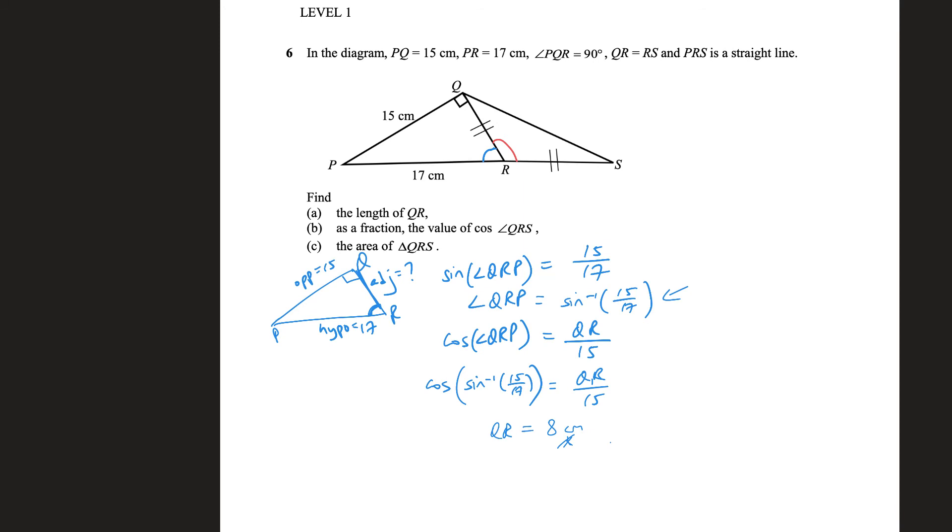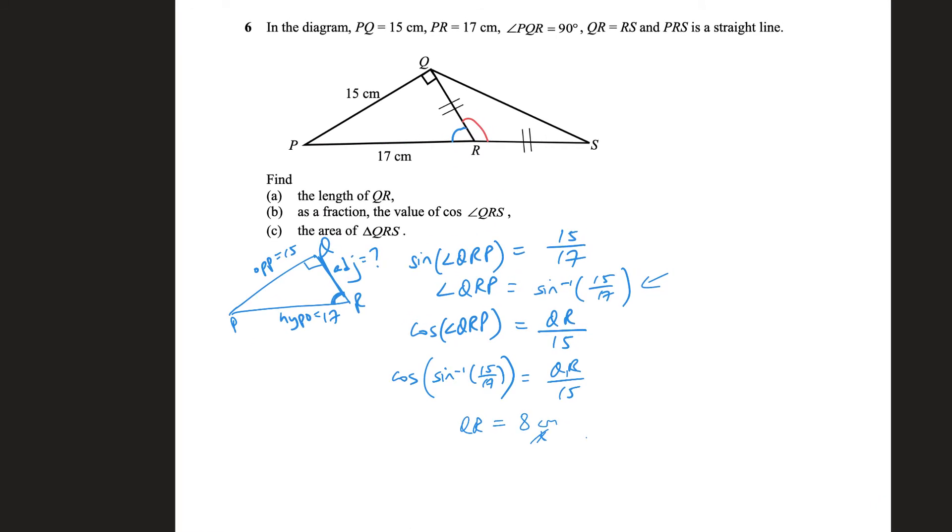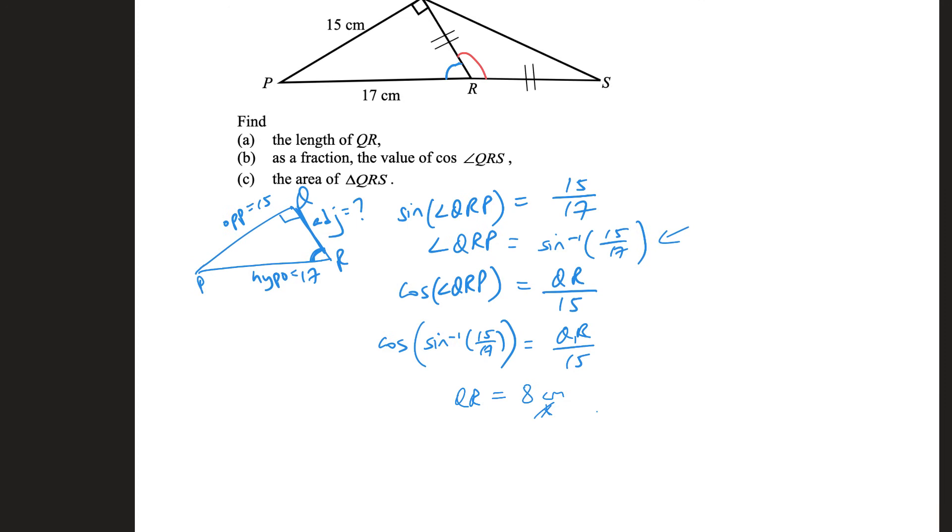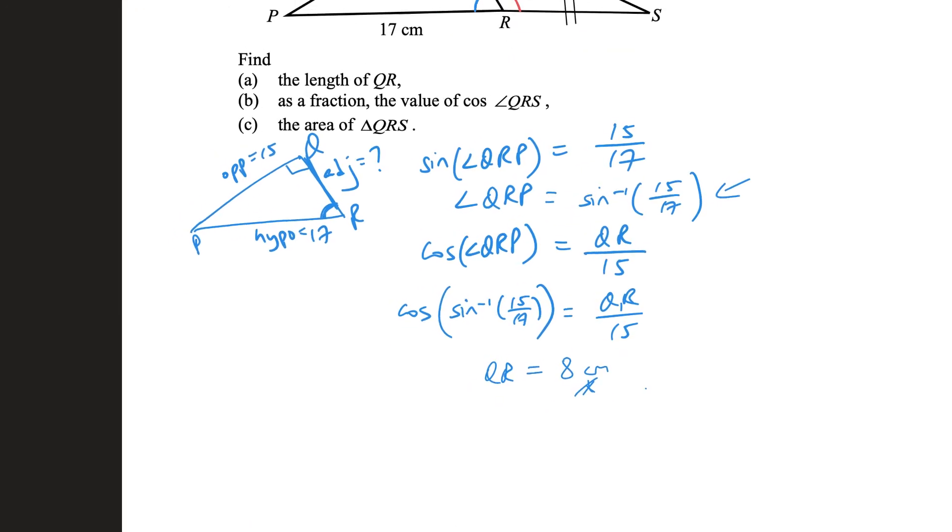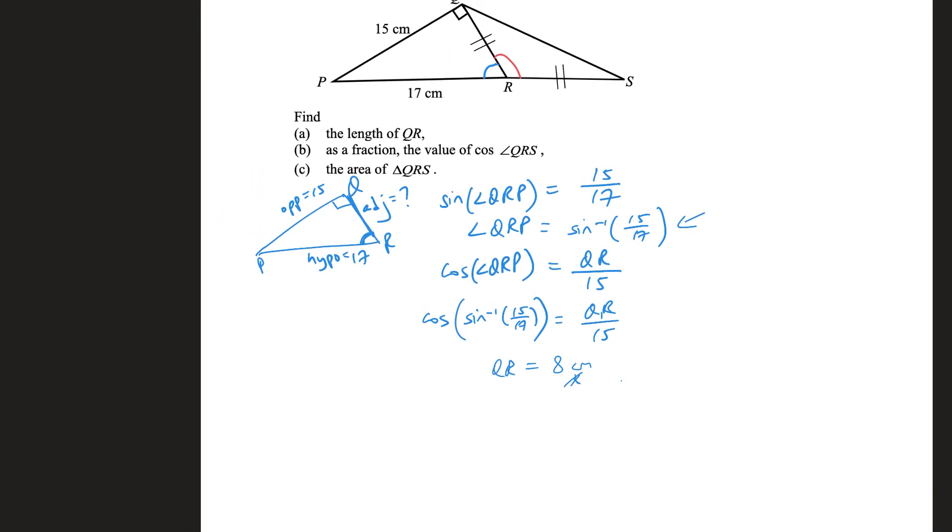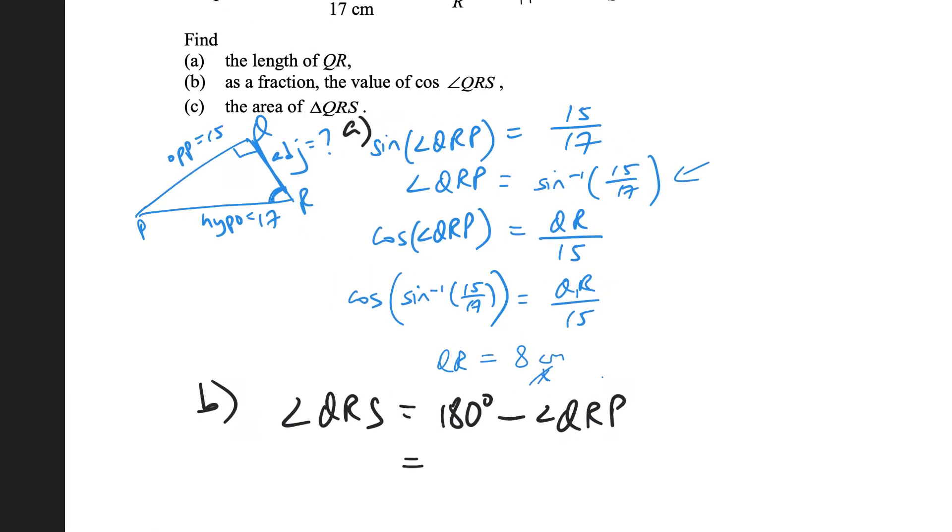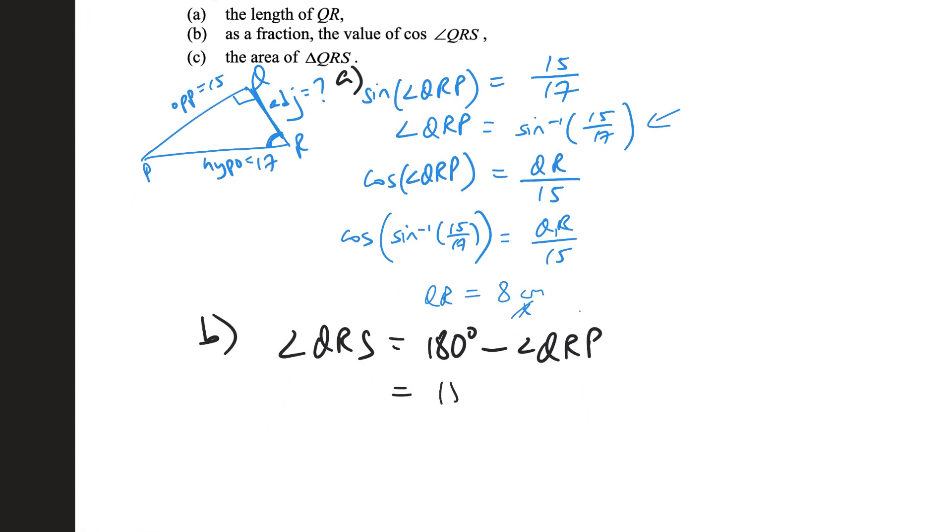So I can simply say that the cosine of QRS, let me just do it step by step. For part B, I can say QRS is simply 180 degrees minus QRP. And 180 degrees minus QRP is simply 180 degrees, what's QRP? This minus sine inverse 15 over 17.